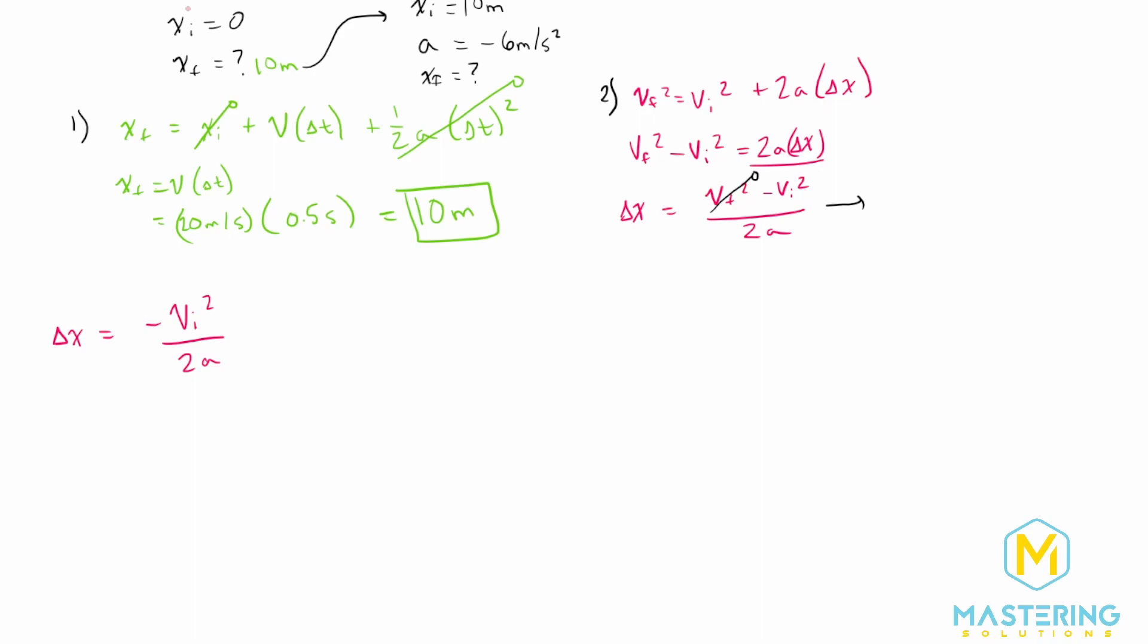So for this, we want the negative to remain outside of the parentheses, because what we have is negative, or we're minusing v squared. So don't get confused, because sometimes students will square a negative vi, which will give you an incorrect answer. We need a negative initial velocity.